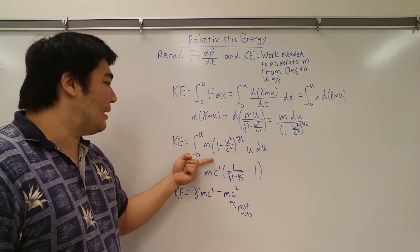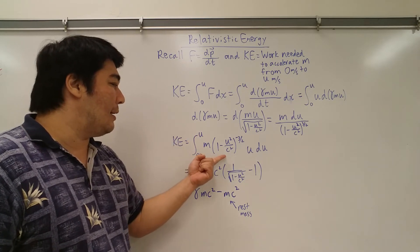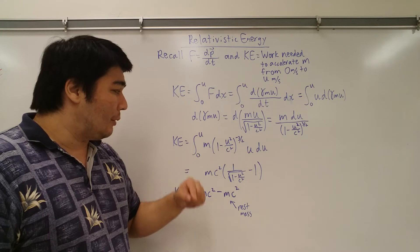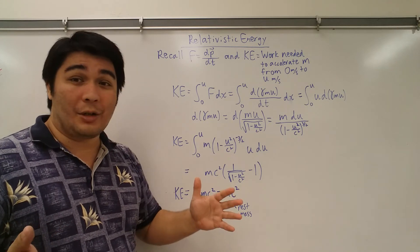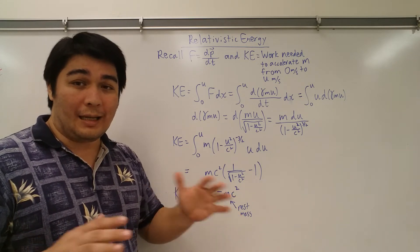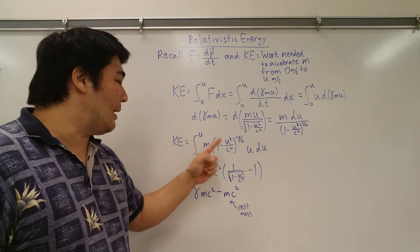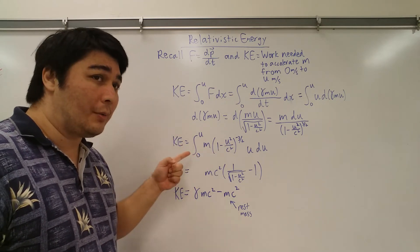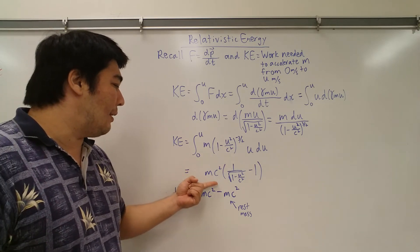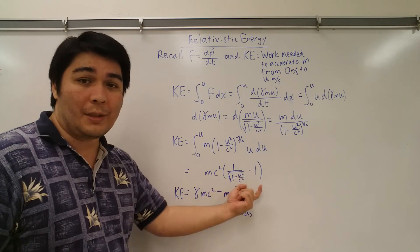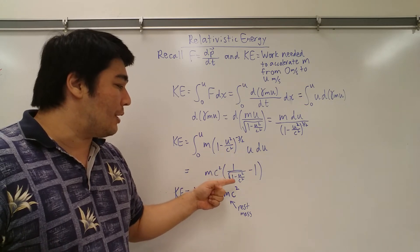I plug all of my results back into the kinetic energy equation. So I got the integral from zero to u of m times one minus u squared over c squared raised to the negative three over two power times u du. So now that I've got everything in terms of u and the differential du, I can now actually use my u substitution tools and go right through all of this. And then find out that when I take the integral, I've got mc squared out and that's a common factor between these two terms. I pull that out and then all I'm left with is one over square root of one minus u squared over c squared minus one.